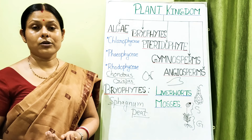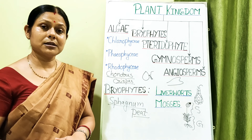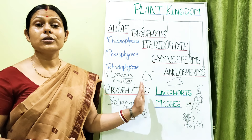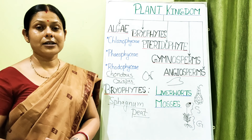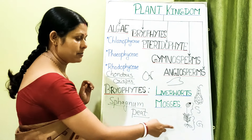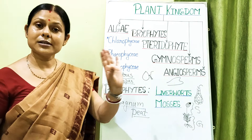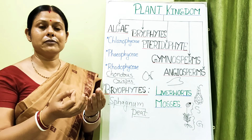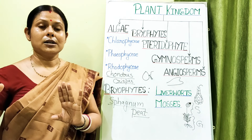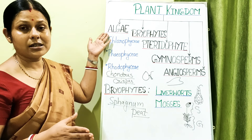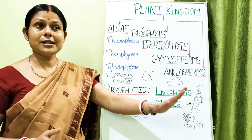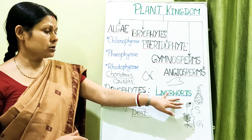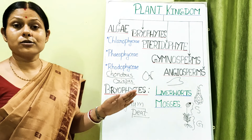The sporophyte in bryophytes can be said to be somewhat parasitic since it derives its nutrition from the gametophytic plant body. The gametophytic plant body is independent while the sporophyte is dependent. This confirms that the alternation of generation in bryophytes is haplodiplontic — the haploid phase is dominant, but the diploid phase is still elaborate and present, unlike in algae where the sporophyte was only a brief zygote stage.